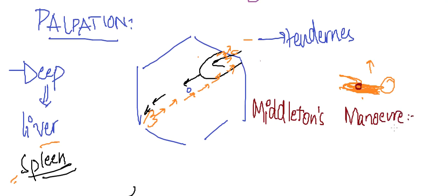There is also Middleton's manoeuvre. In this manoeuvre, the examiner stands on the left side of the patient facing the foot end of the bed. The patient turns to the right side so that the spleen is above. The examiner hooks the fingers of the left hand under the costal margin, with the right hand exerting pressure over the posterolateral aspect of the thorax. If the fingers cannot hook, the spleen is not palpable.